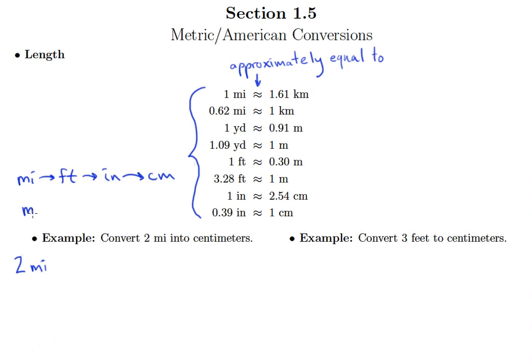But there is another way. I could immediately get into the metric system, so I could go from miles to kilometers. Once we're in the metric system, getting to any other metric unit is easy. I could go directly from kilometers to centimeters. Notice if I stay in the American system longer I'm going to have a longer problem than if I get to the metric system right away.